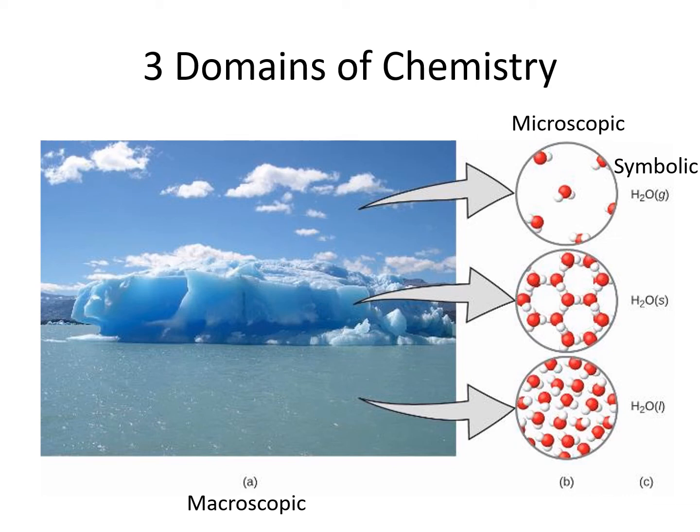Throughout this course, we will be looking at three different domains of chemistry. The macroscopic domain is what we can see with our eyes. For example, we can see the three phases of water in this picture: solid water in the form of ice, liquid water, and water vapor as a cloud.